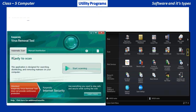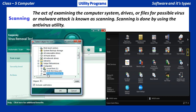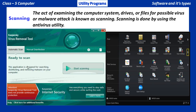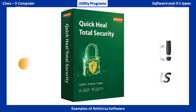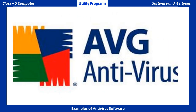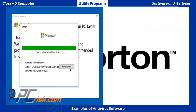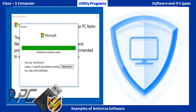Scanning: The act of examining the computer system, drives, or files for possible virus or malware attack is known as scanning. Scanning is done by using the anti-virus utility. Examples of anti-virus software are Quick Heal, Avast, Avira, Norton, etc. You can scan the drives, pen drive, and the entire computer system using anti-virus software.